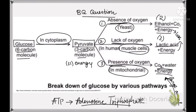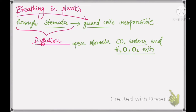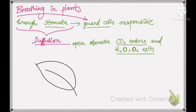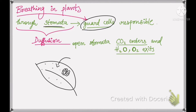Now let's talk about breathing in plants. As discussed in the nutrition portion, plants have minute structures all over their leaves called stomata, enclosed by guard cells. These guard cells regulate the size of stomata depending on osmotic pressure. When stomata open, CO2 enters in by normal diffusion because CO2 concentration is lower inside.